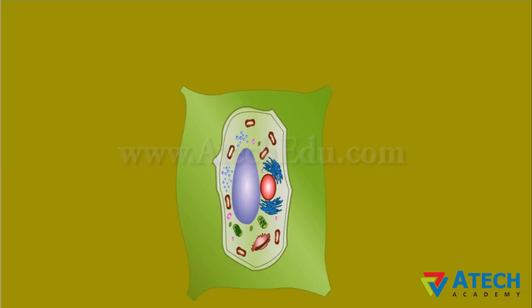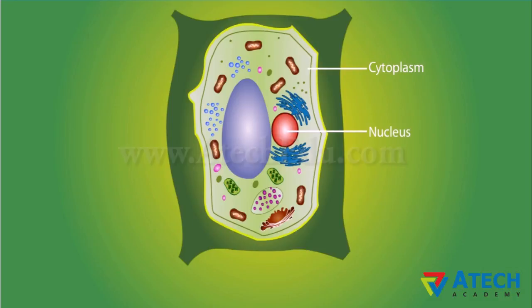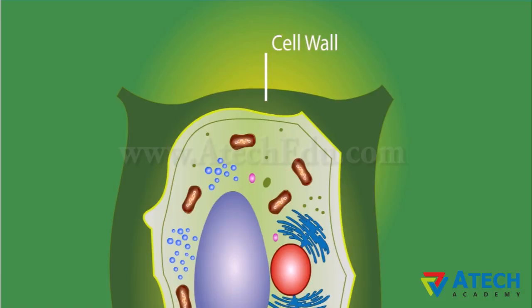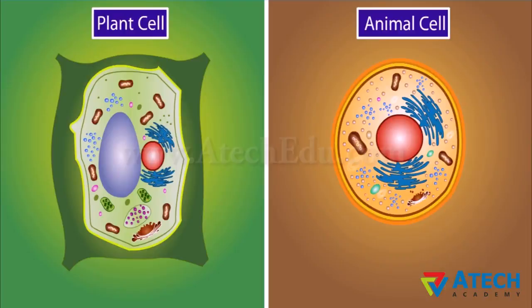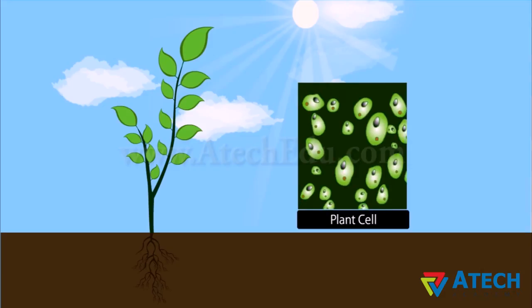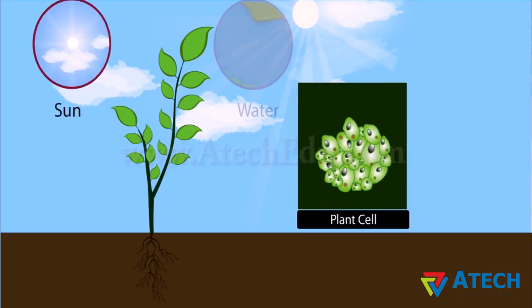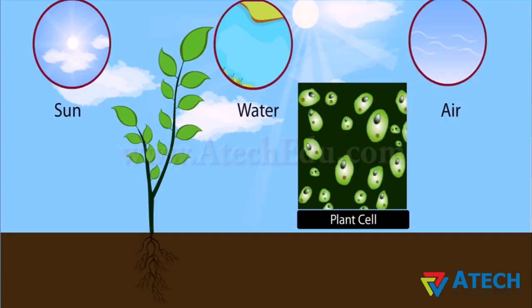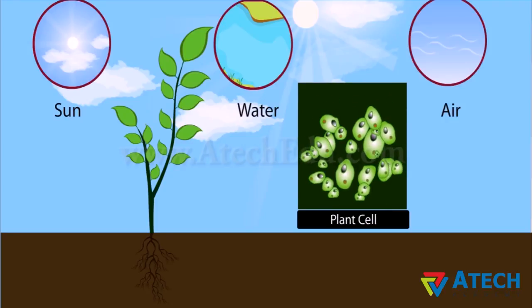The cytoplasm and nucleus are enclosed within the cell membrane. This cell membrane is also bounded by another thick cover known as the cell wall. Cell wall is present only in plants for protection — it is not present in animal cells. Plant cells need protection against variations in temperature, high wind speed, and atmospheric moisture.